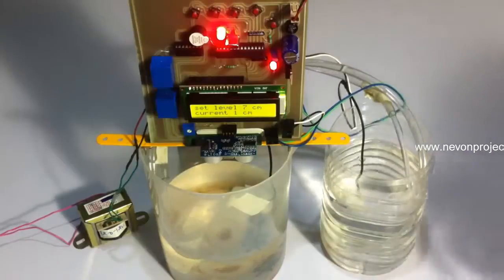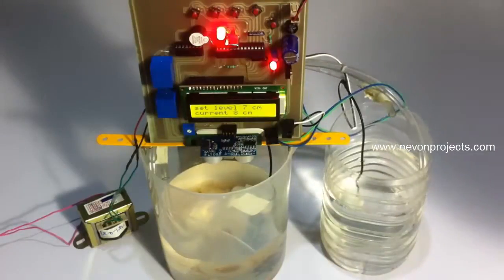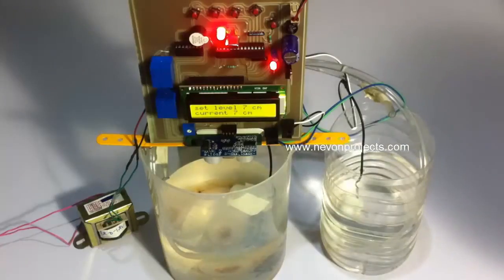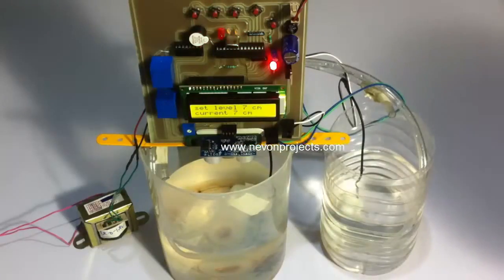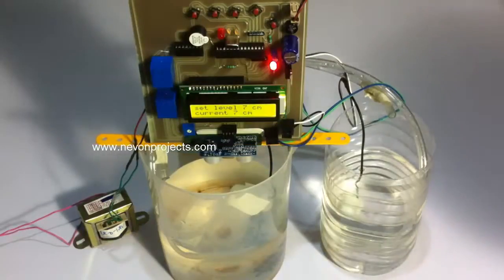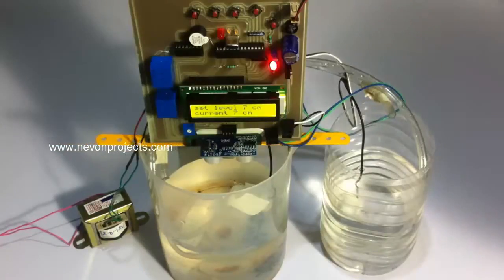As you can see, the system has started running and filling up the container to reach that particular height. You can see now that since it has reached 7 centimeter height, the motors have stopped and the system also sounded a buzzer to indicate that it has reached that particular level.